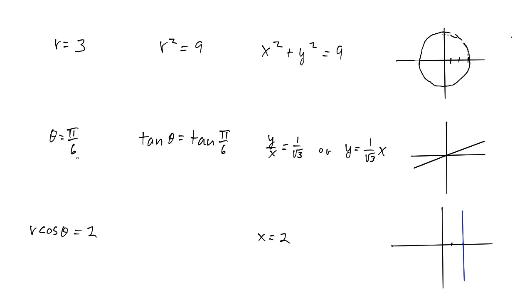On the other hand, we could say theta is equal to a constant, say pi over 6. To convert this to rectangular coordinates, take the tangent of both sides. So we have tangent of theta is tangent of pi over 6. Tangent of pi over 6 is 1 over radical 3, and tangent of theta is y over x. And if we multiply both sides by x, we get y equals 1 over radical 3 times x. That's the equation of a line with slope 1 over radical 3, as you can see here.